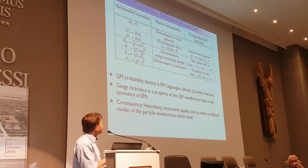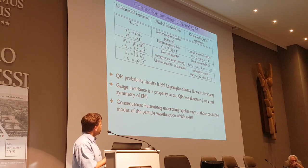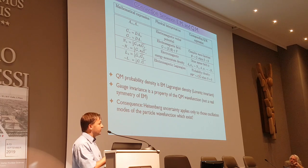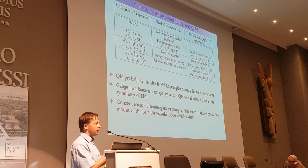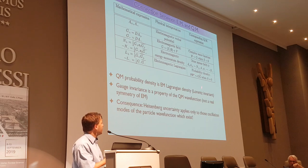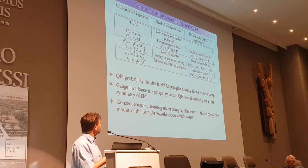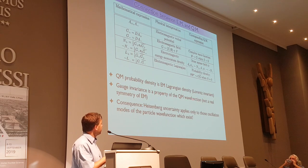We can recognize interesting connections between electromagnetism and quantum mechanics. The quantum mechanical probability density is the same thing as the electromagnetic Lagrangian density. The wave function develops according to the Lagrangian, which happens to be Lorentz invariant, and this holds in the case where the squared field is zero. The gauge invariance is a property of the quantum mechanical wave function, but it doesn't have to be an actual symmetry of electromagnetism.